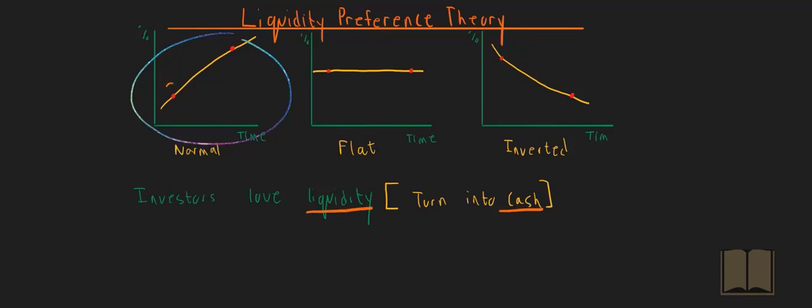They then have a preference for shorter term instruments like a one-year bond. If they are to take a five-year bond, then they want to be compensated for the lack of liquidity by a higher interest rate.